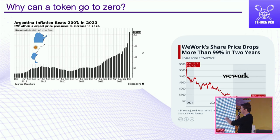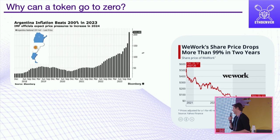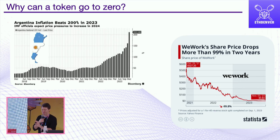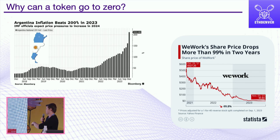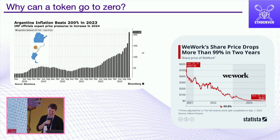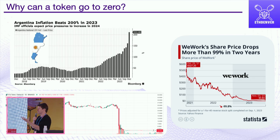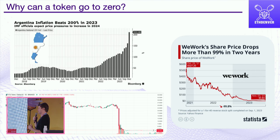If it's a stock like WeWork, you see a 99.8% decrease over four short years — it's now bankrupt. Another example: FTX. The FTX token may have some value, but the event of a collapse of an exchange means no one wants to be associated with that token or entity, so they sell immediately and it dumps to zero.